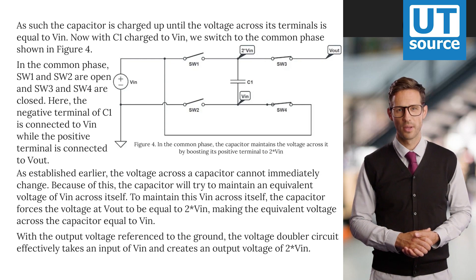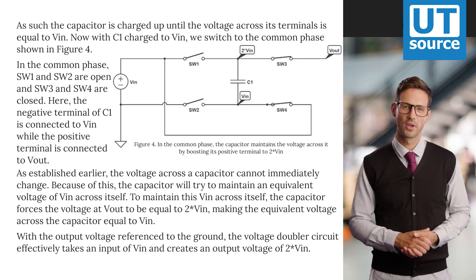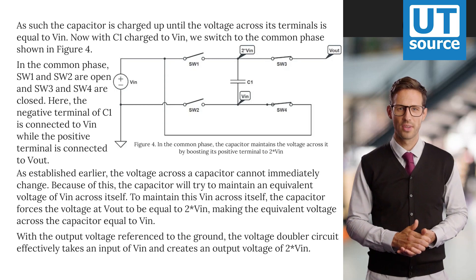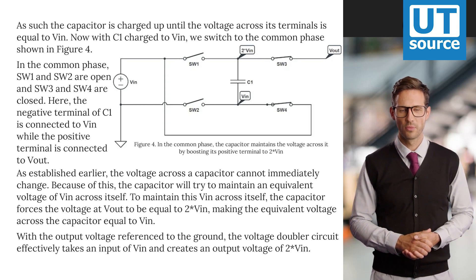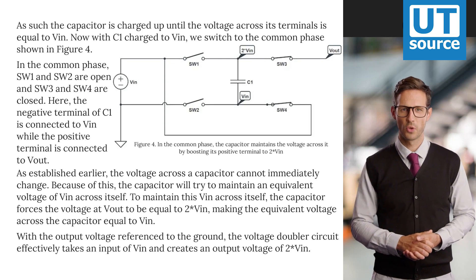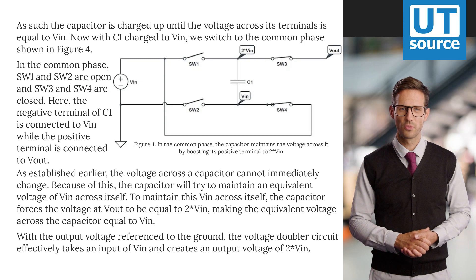the voltage across a capacitor cannot immediately change. Because of this, the capacitor will try to maintain an equivalent voltage of VIN across itself. To maintain this VIN across itself, the capacitor forces the voltage at VOUT to be equal to 2*VIN, making the equivalent voltage across the capacitor equal to VIN.